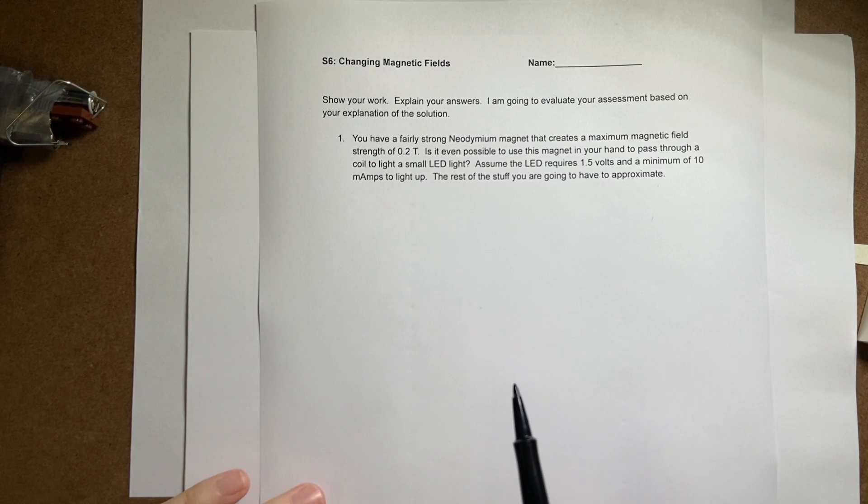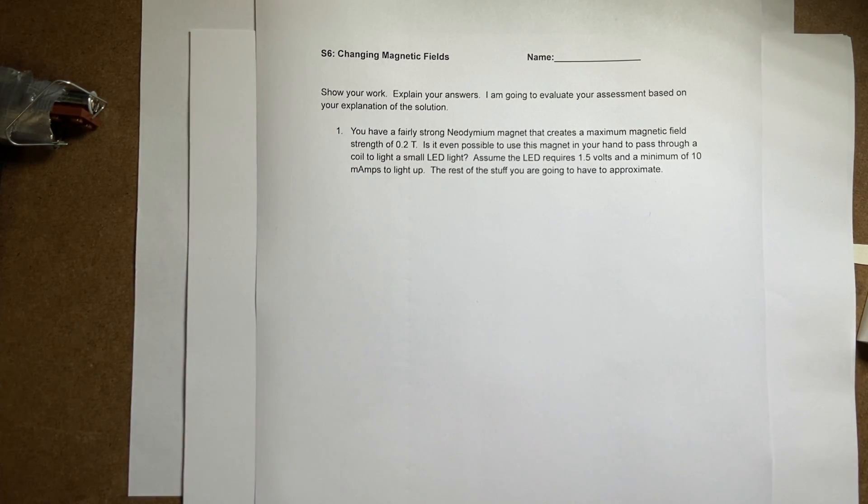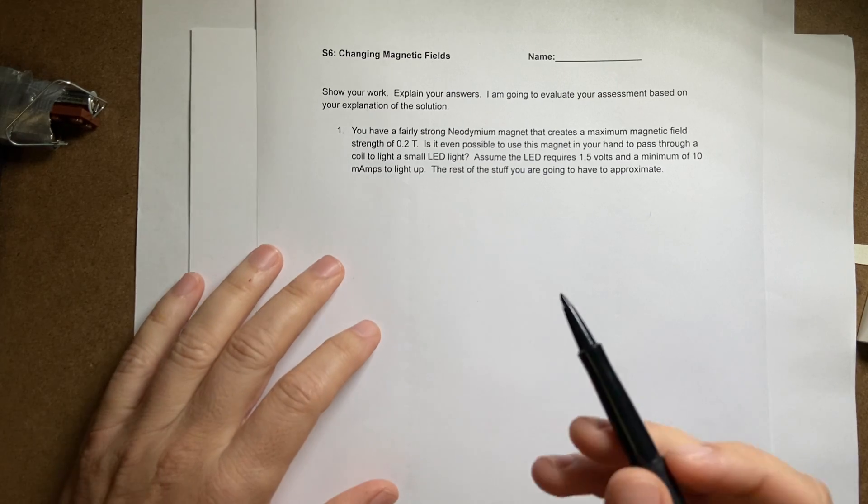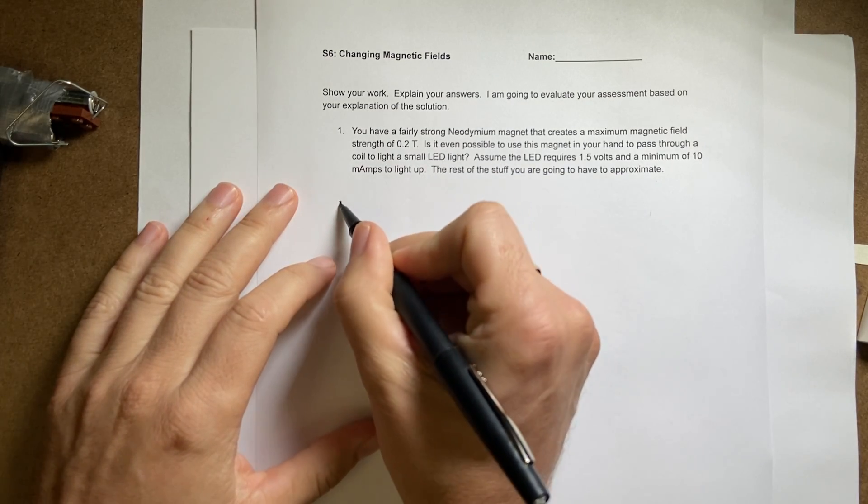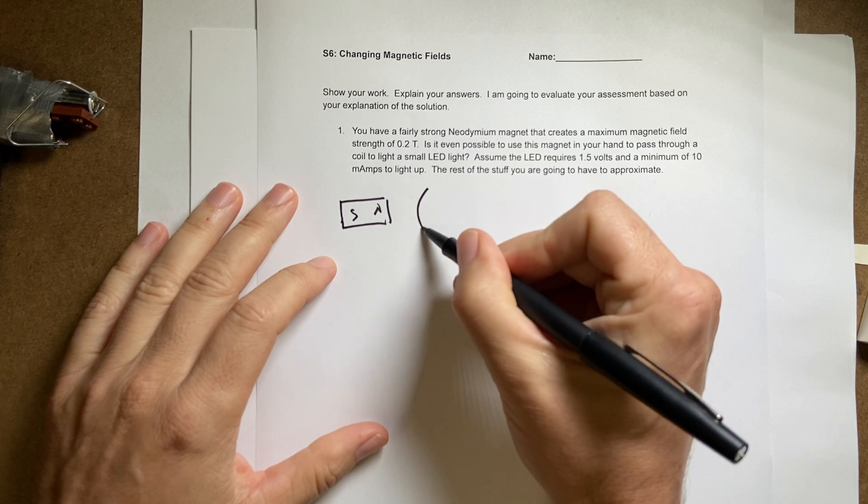This is a real world problem because I actually wanted to do this demo. I wanted to take a magnet and pass it through a coil and light up an LED and say, is it even possible? So let's just draw a picture. Here's my little magnet, north, south, and then here's my coil of wire.